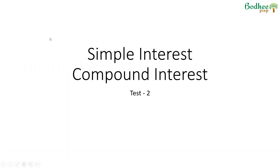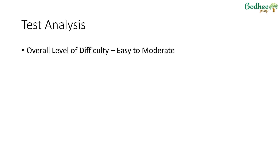As far as this test is concerned, this was a test on the topic of simple interest and compound interest in the app. This is test number two. Overall analysis for this test: it was an easy to moderate test, and therefore out of 10, almost 7 net questions could have been attempted correctly.